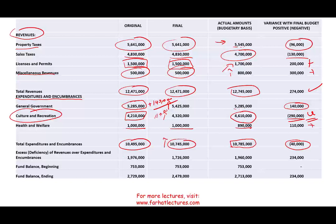The excess of revenues over expenditures: original estimate was $1,976,000; after the $250,000 appropriation increase, the final budgeted amount dropped to $1,726,000; the actual excess came in at $1,960,000 — a positive overall variance. The ending fund balance equals the beginning balance of $753,000 plus the change in fund balance.